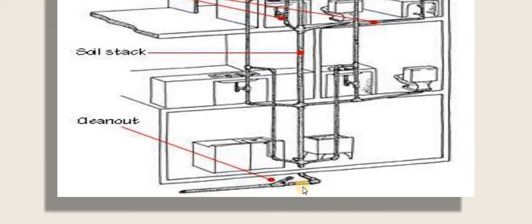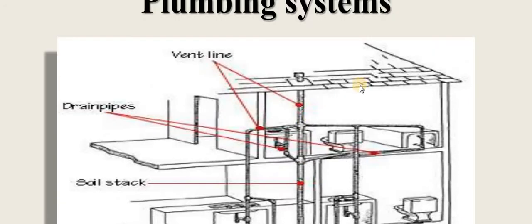A clean-out system is provided so that if clogging occurs over time, water can be applied to create a flushing action through the pipe, flushing out clogging particles so sewage flows easily into the municipal sewer. The vent pipe provides proper ventilation so that foul gases or smells are passed away and mixed into the atmosphere.